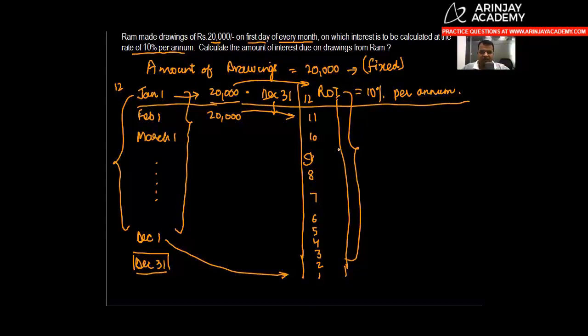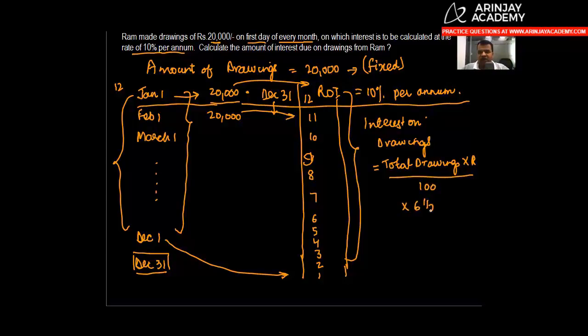There's a formula for calculating interest on drawings which says: you can calculate the interest on drawings by multiplying total drawings into rate of interest divided by 100 into 6.5 months divided by 12.